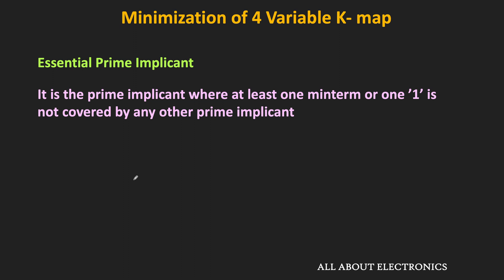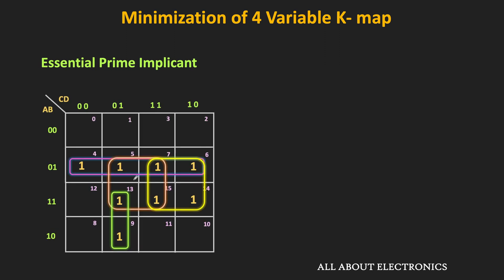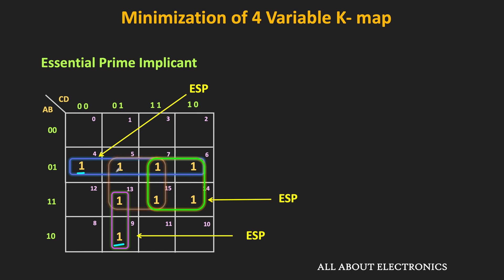To understand this, let us take the earlier example. If you see this prime implicant, then this one is not covered by any other prime implicant — therefore, this prime implicant is the essential prime implicant. Similarly, minterm M14 is not covered by any other prime implicant — therefore, this prime implicant is also an essential prime implicant. Likewise, minterm M9 is not covered by any other prime implicant — therefore, this group is also an essential prime implicant. On the other hand, all the ones of the last prime implicant are already getting covered by the other prime implicants, so this last prime implicant is the non-essential prime implicant.